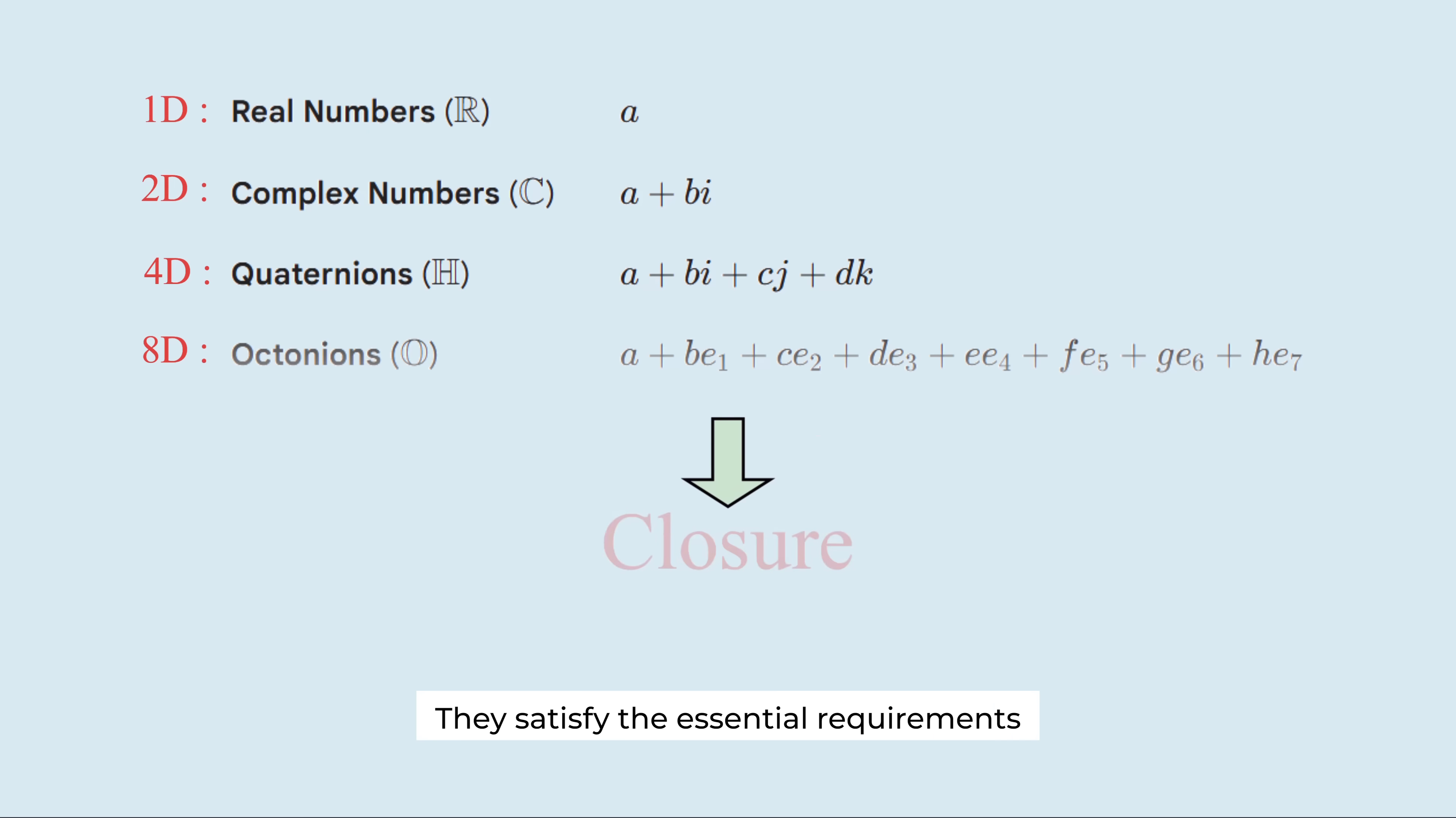But there is an interesting twist. In 8 dimensions, with the octonions, the associative law actually fades. Even so, the octonions preserve one crucial property.